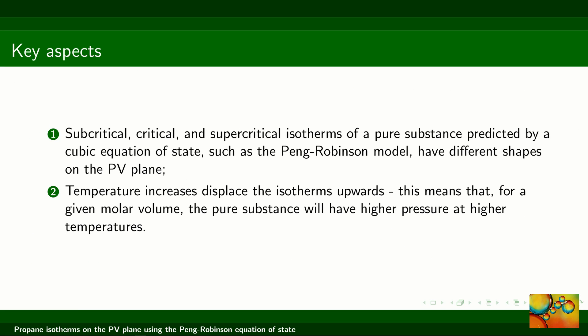The key aspects of this example were: first, the observation that subcritical, critical, and supercritical isotherms have different shapes on the pressure-volume plane, as predicted by a cubic equation of state such as the Peng-Robinson model. Another observation is that for a given molar volume, as temperature increases, pressure increases. Thank you very much for watching this presentation. If you liked it, give us a thumbs up, visit our Facebook page, and see you next time.